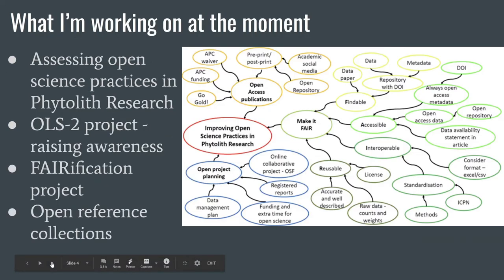I have spent the past year developing an open project to assess open science practices in my particular field, Phytolith Research, which is the sub-discipline of archaeobotany focused on analysing microscopic plant remains to address questions such as past human plant use, environmental and climate change. This is a concerted effort to try to change the research culture to be a much more sustainable way of working. My assessment of open science practices found that the number of open access publications was poor and data and metadata sharing needed significant improvement. I then embarked on a project to address these issues through the Open Life Science Mentoring Programme.